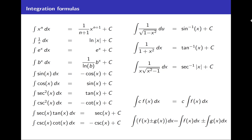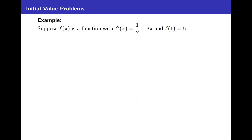We'll start with an example that illustrates our main topic for today: initial value problems. If you've got a function and you know that's the derivative of some other function, and you're trying to find the function that gives you that derivative, you know that in taking the antiderivative you get a plus c. So you don't really have a concrete function because you don't know what c is. But sometimes there will be an additional piece of information — called an initial value — that tells you what c is. This type of problem is called an initial value problem.